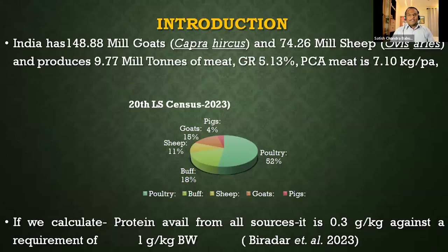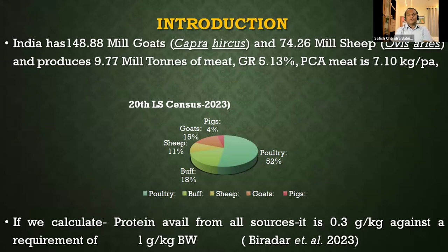India has a wonderful livestock resource — almost 550 million livestock, out of which 148 million are goats and 74 million are sheep, so almost 40 percent of our livestock comes from small ruminants. India is right now producing some 9.77 million tons of meat and the growth rate in meat production is almost 5.23 percent. The per capita availability of meat has increased from 5 kg to 7 kg per annum.